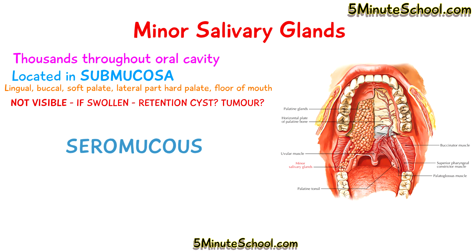Minor salivary glands are seromucus, meaning they produce both serous saliva and mucin saliva. However, in some areas there is a greater ratio of mucin-producing to serous-producing minor salivary glands. The location of the glands is what determines the type of saliva produced.